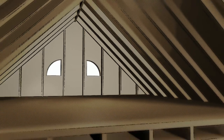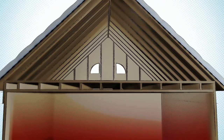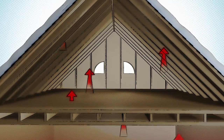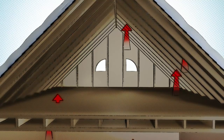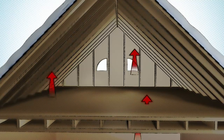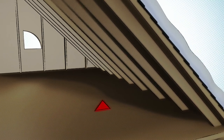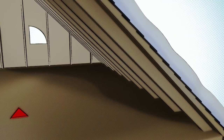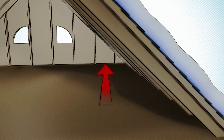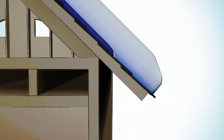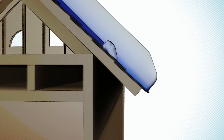Let me explain how ice dams happen. In the winter time you're heating the rooms below, and if you don't have any insulation in the floor, that warm air is going to come up and get into the attic, heating the underside of the roof. When you have a lot of snow on the roof, that snow acts like an insulation blanket. The warm air in the attic heats the lower layer of snow, melting it, turning it into water, and it runs down the roof shingles. When it reaches the cold overhang, it freezes, forming a dam.